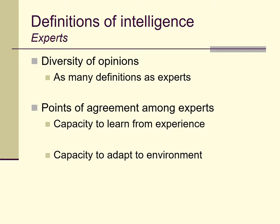That said, there are some areas of commonality or consensus. Those points of agreement include things like the capacity to learn from experience and, relatedly, the capacity to adapt to the environment. A relatively more mentally able person can more easily or more quickly learn a new ability or skill, learn from experience with the environment, and perhaps adapt to the environment better, faster, and more efficiently than someone with less mental ability.